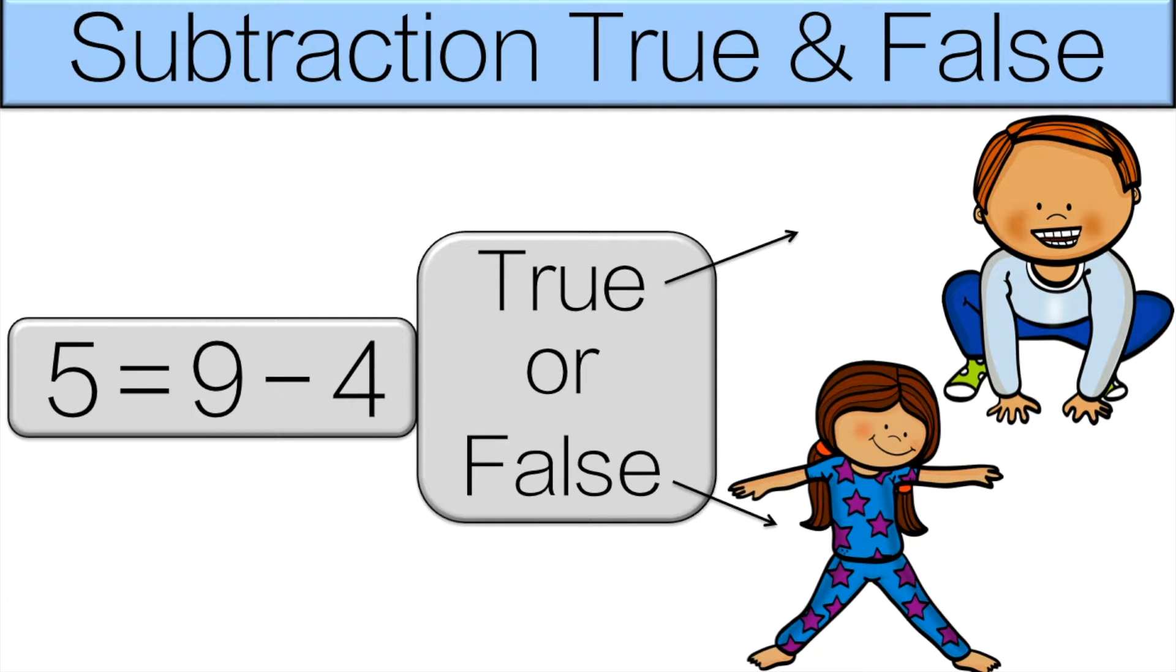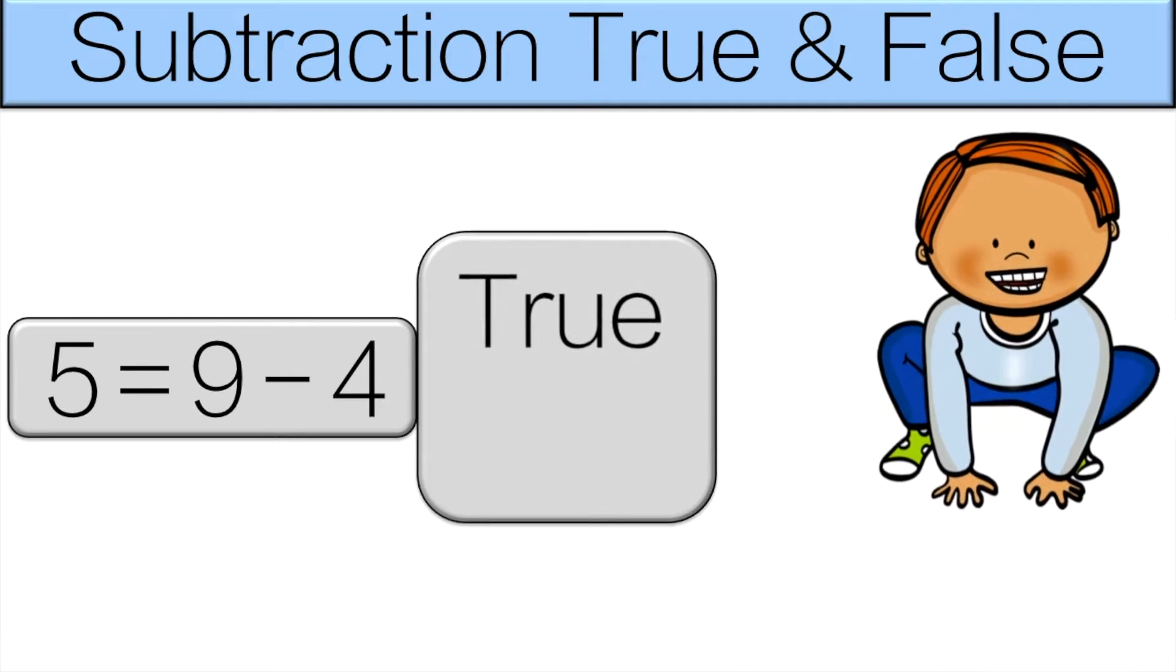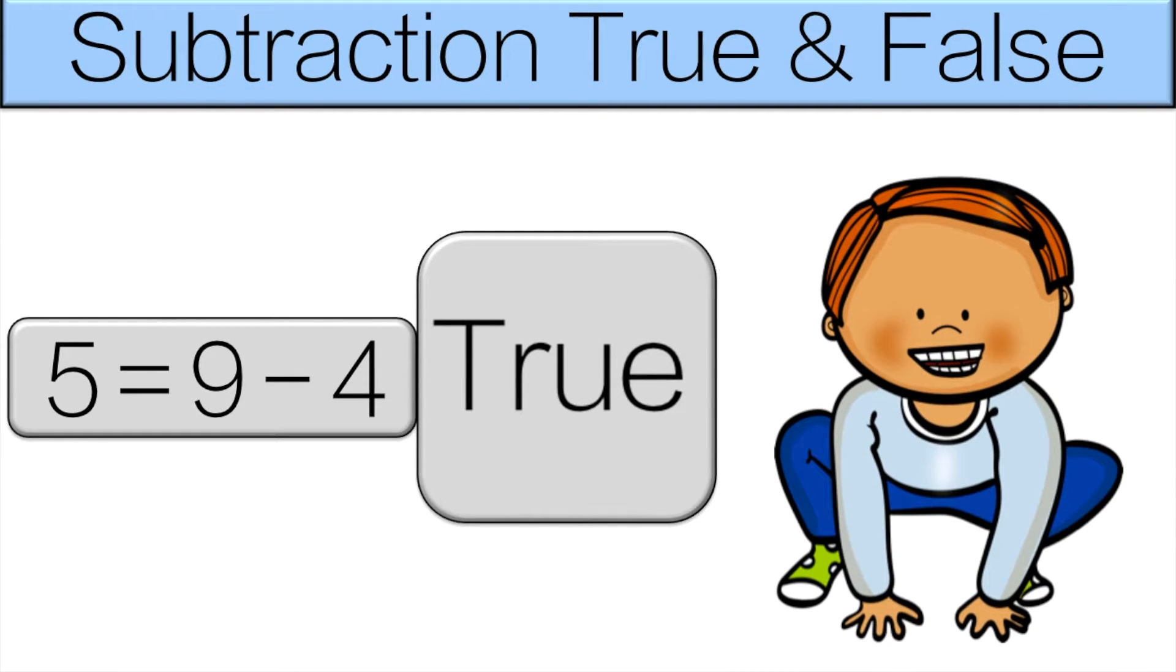So look at the equation first. 5 equals 9 minus 4. Is that true or false? It is true. So do the frog pose for 10 seconds.